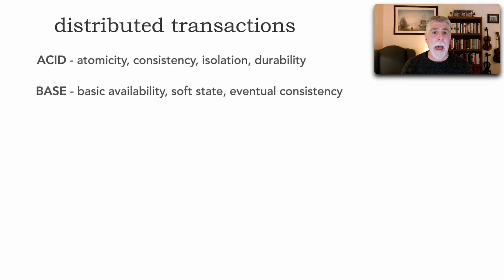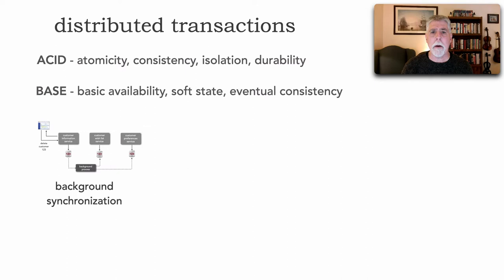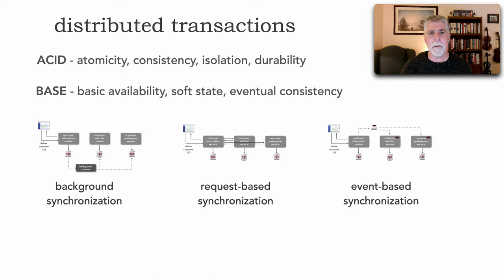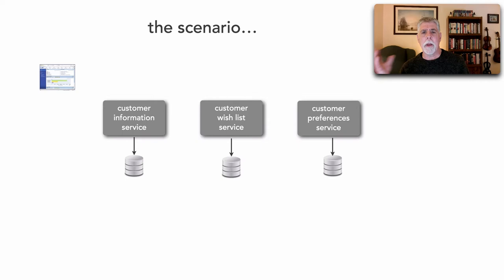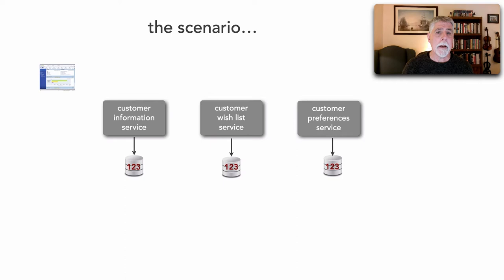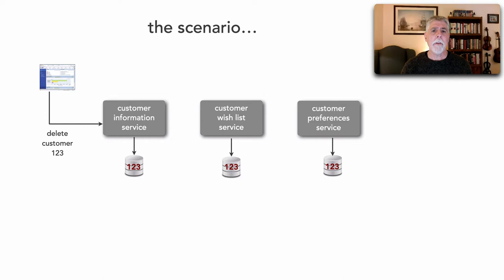What I want to focus on in this lesson are the patterns of eventual consistency — how will everything become consistent? There are really three different patterns: background synchronization, request-based synchronization, and event-based. Let me show you each of these using a scenario first. We have a website with three services: a customer information service, a wish list service, and preferences. I'm a customer on this website but I want to unsubscribe, so we do a delete of customer 123. The customer information service receives that request, deletes that customer, responds back — and now we are left in an inconsistent state.